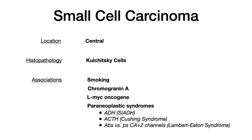You also want to be on the lookout for chromogranin A. This is a tumor marker expressed by small cell carcinoma — a secretory protein associated with neuroendocrine cells. Recall that small cell carcinoma has those Kulchitsky cells, which are neuroendocrine. So if an unknown lung cancer is expressing chromogranin A, think small cell carcinoma. The other high-yield association is the L-myc oncogene — a mutation in a proto-oncogene that contributes to the formation of small cell carcinoma.